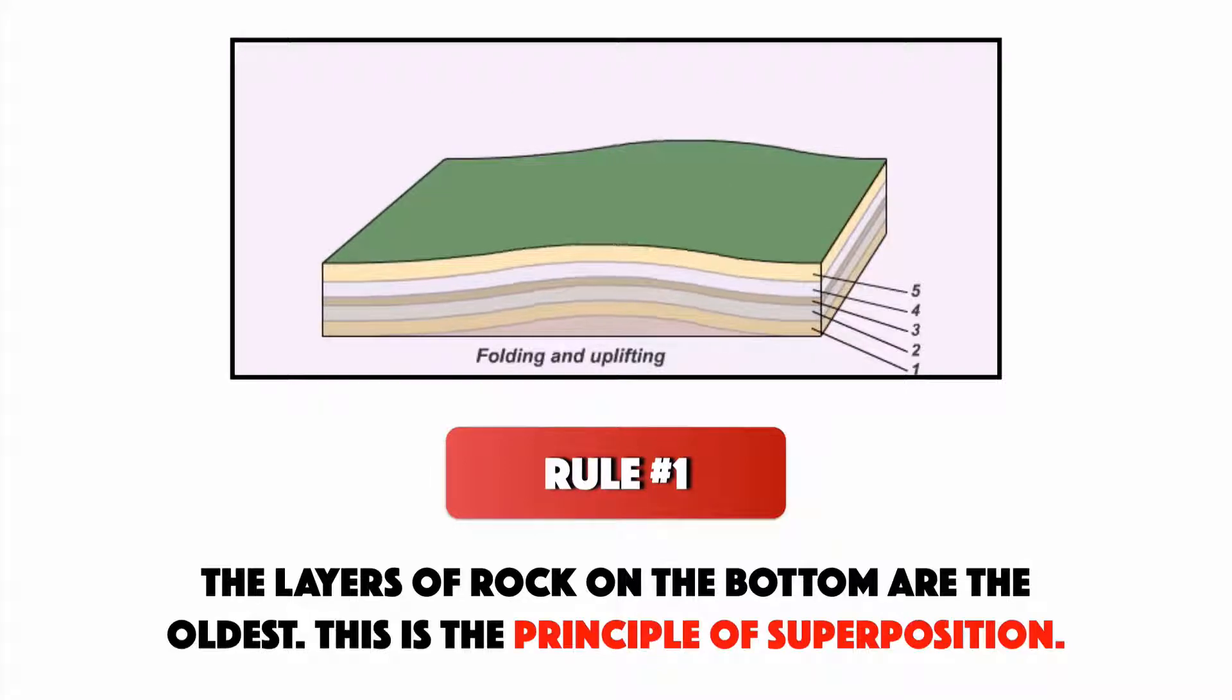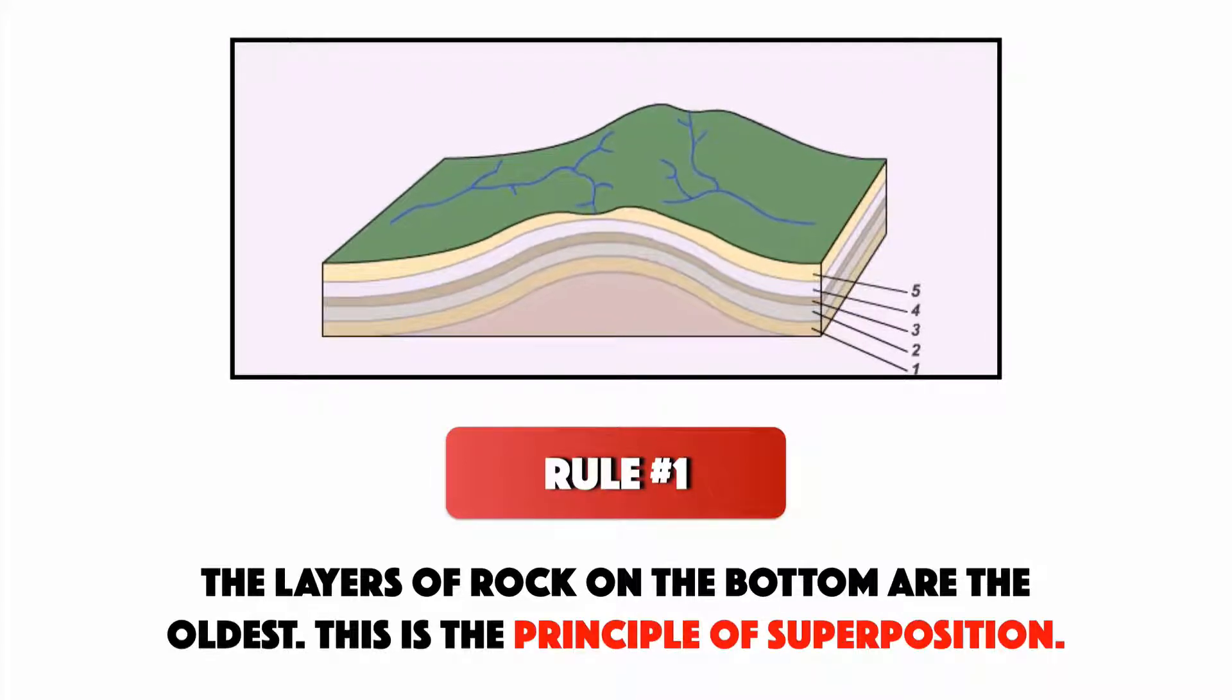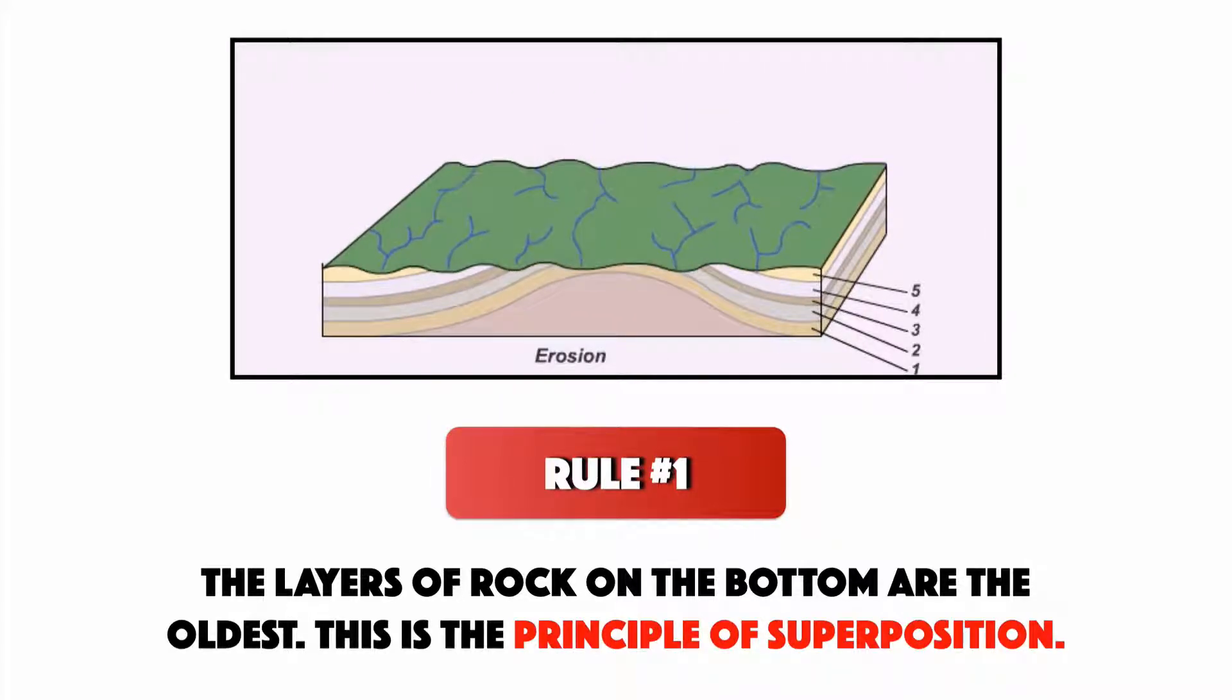And here's our first rule: layers of rock on the bottom are the oldest. We call this the principle of superposition. Assuming uniformitarianism happened, the layers that get laid down first are going to be on the bottom, and anything that comes after is going to be piled on top.